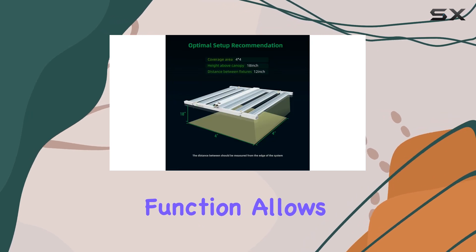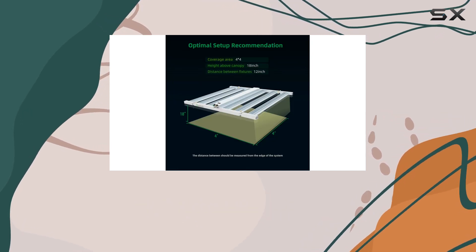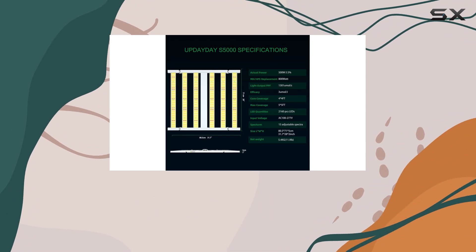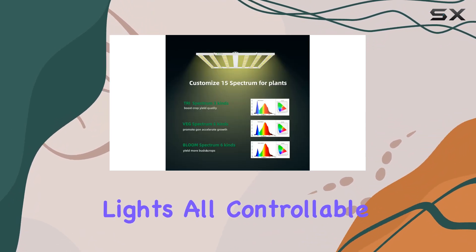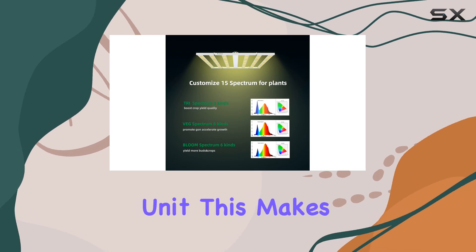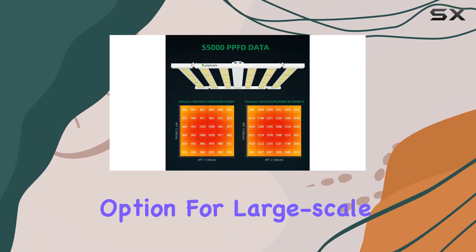Additionally, the dimmable function allows you to control brightness levels between 15 to 100%, and commercial users will love the option to sync up to 30 lights, all controllable from one master unit. This makes it a fantastic option for large-scale growing operations.